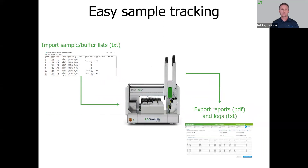First, it has easy sample tracking. If you are doing buffer exchange, you're usually getting your samples from someone or somewhere else, processing them, and then sending them off to someone or somewhere else. BigTuna makes this really easy with straightforward sample and buffer lists that can be taken from CSV into text format and imported directly into BigTuna, making it a lot faster to set up your runs. When you're done with those runs, the results are exported in either PDF or text-based format, and you can easily transfer that data into other software.